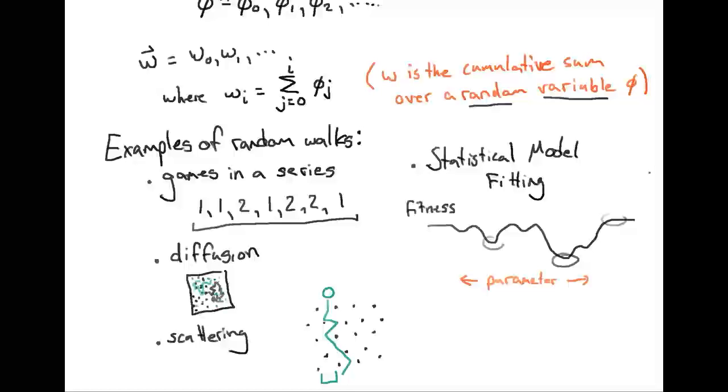For a wide range of problems, you can't actually evaluate your fitness at all the different combinations of parameters. So what people often do instead is a thing called a Markov Chain Monte Carlo, sometimes abbreviated MCMC.